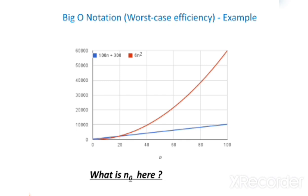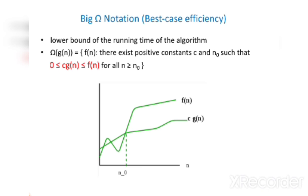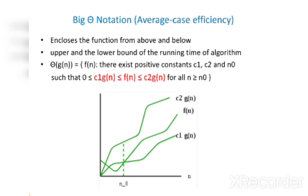Next is Big Omega notation, which defines the best case efficiency. It represents the lower bound of the running time of the algorithm. Ω(g(n)) = f(n) such that there exist positive constants c and n₀ such that 0 ≤ c·g(n) ≤ f(n) for all n ≥ n₀. In the graph, the upper line represents f(n) and the lower line represents c·g(n).